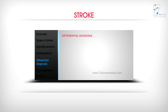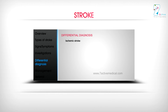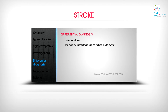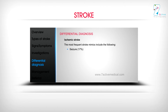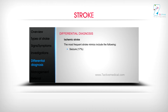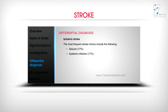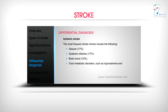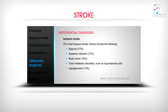Differential diagnosis for ischemic stroke: The most frequent stroke mimics include seizure (17%), systemic infection (17%), brain tumor (15%), toxic-metabolic disorders such as hyponatremia and hypoglycemia (13%), positional vertigo (6%), and conversion disorder.